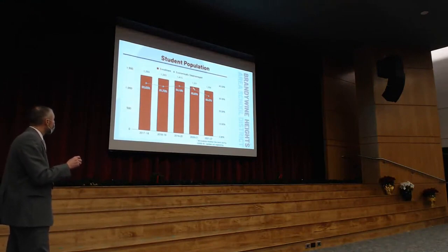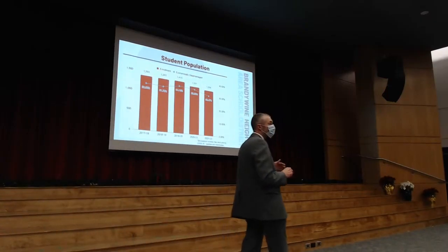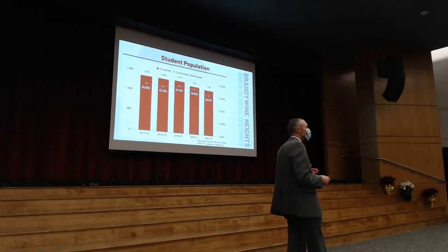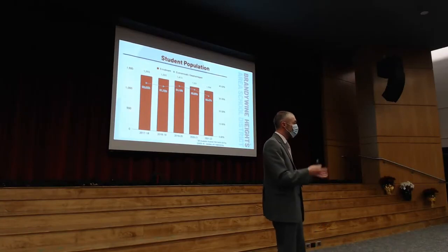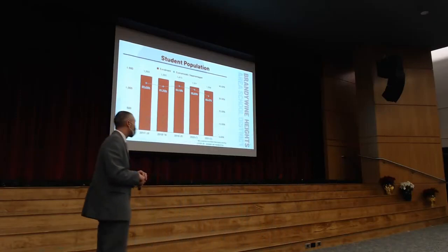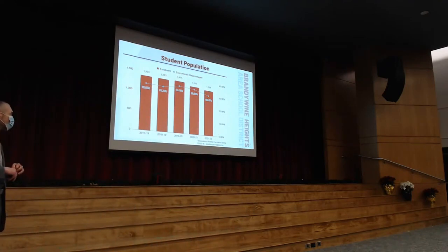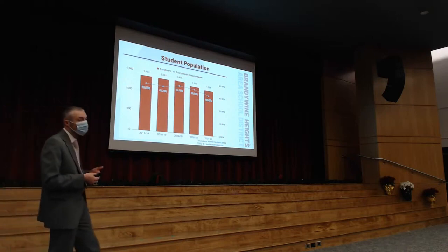When we look at the student population trend over the last five years, we're holding steady, but there's a dip this year. I don't believe it's because our families are more well off — I believe it's because lunches are free this year. The way we measure poverty is by the free-reduced lunch application, and students and parents didn't have to apply, so that number is artificially low. When we started this school year, we had two grade levels at the elementary that were almost 50% poverty.